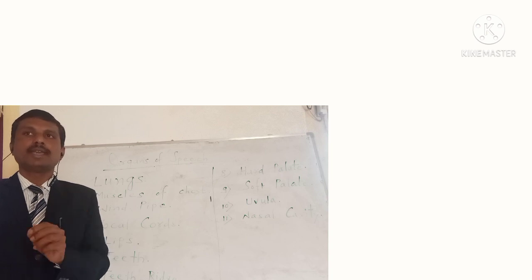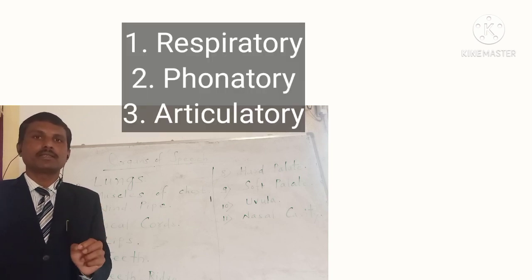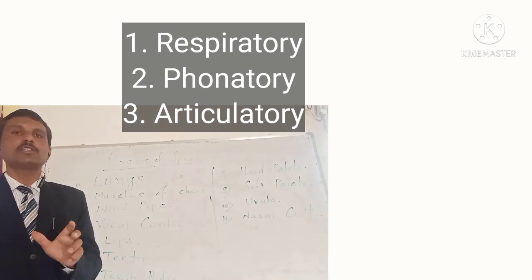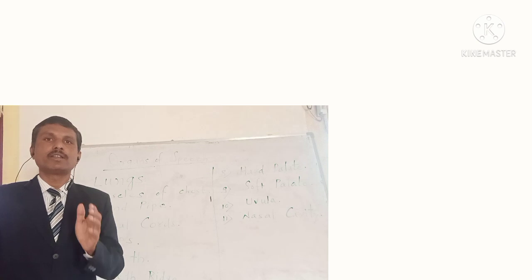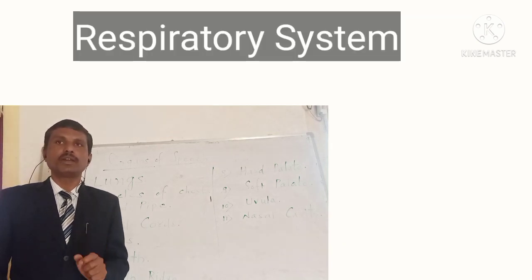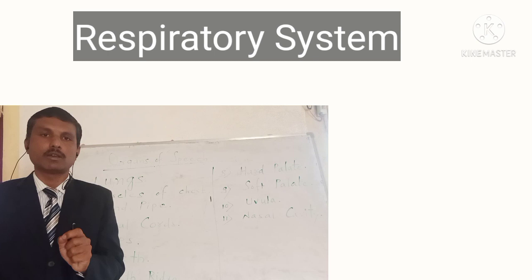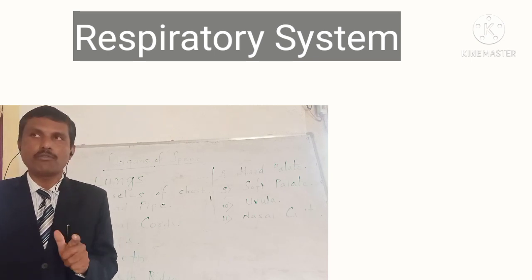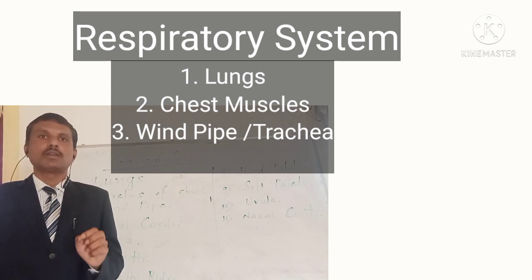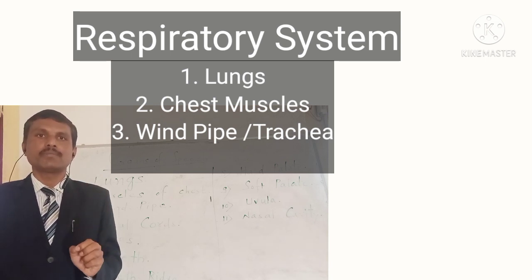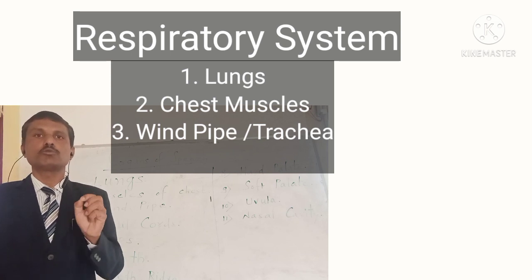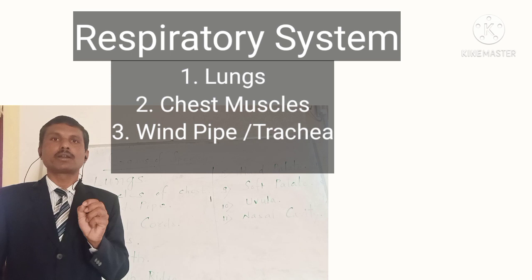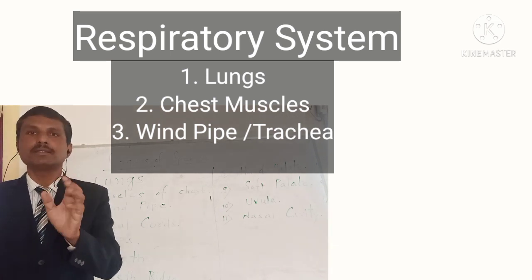These three categories are: respiratory system, phonatory system, and articulatory system. Let us first of all understand the respiratory system and its function in relation to the production of speech sounds. Respiratory system consists of lungs, muscles of chest, and windpipe, which is also known as trachea. So these are the three important organs we study under the respiratory system.